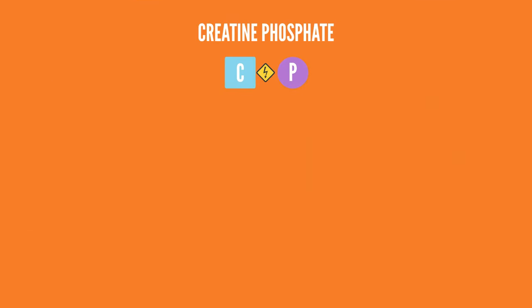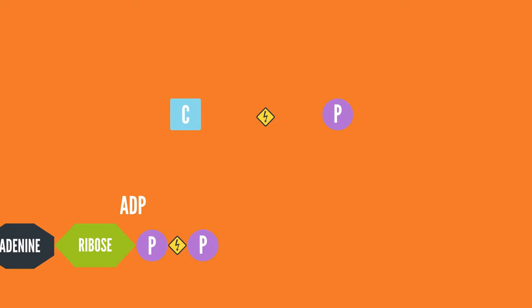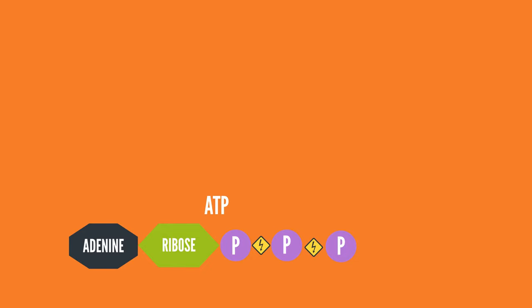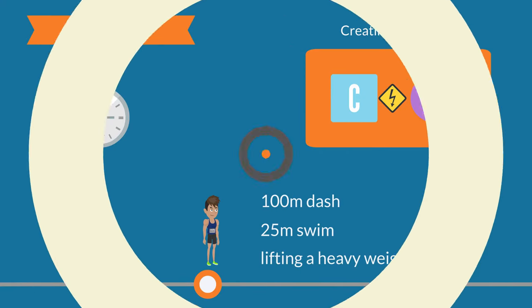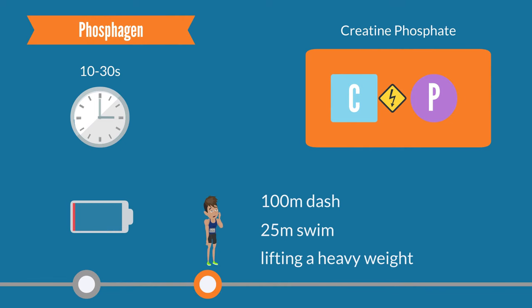When creatine phosphate breaks down, it supplies a phosphate group that combines with ADP to replenish ATP. However, like intramuscular ATP, creatine phosphate is limited. Therefore, this system is fully depleted after 20 to 30 seconds of exercise.